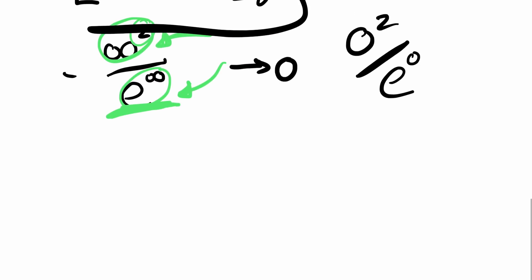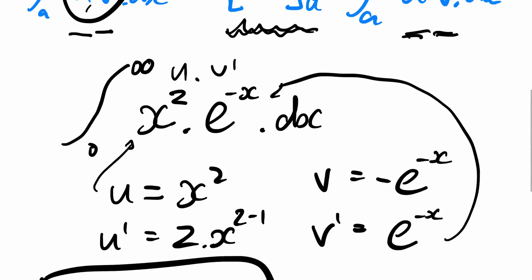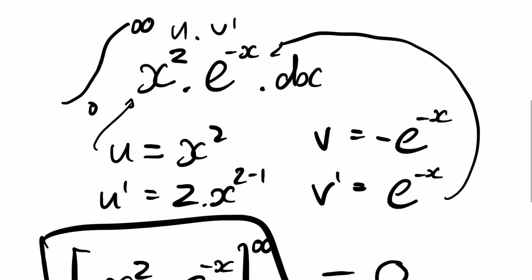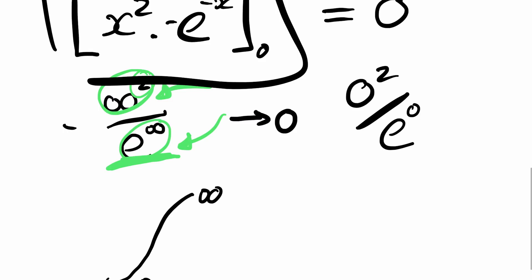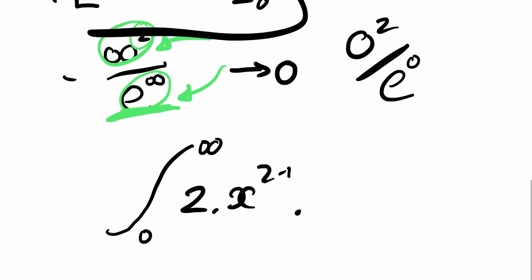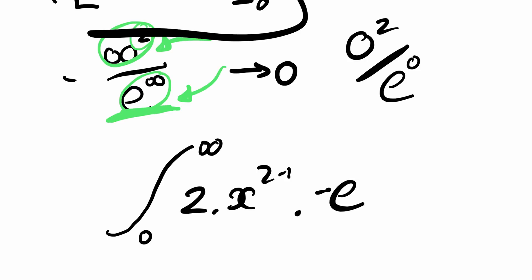All we're left with now was the integral from zero to infinity of, well, what do we got now? So this is now the derivative of u times v. Derivative of u is this fun thing here. So I'm going to move that down there. That's z times x to the z minus one times v. So that's negative e to the negative x times dx.